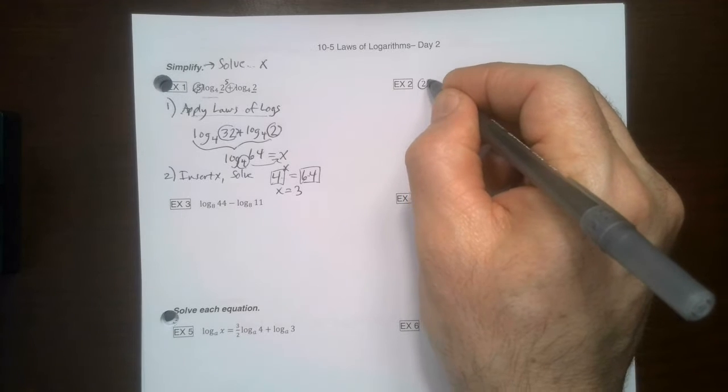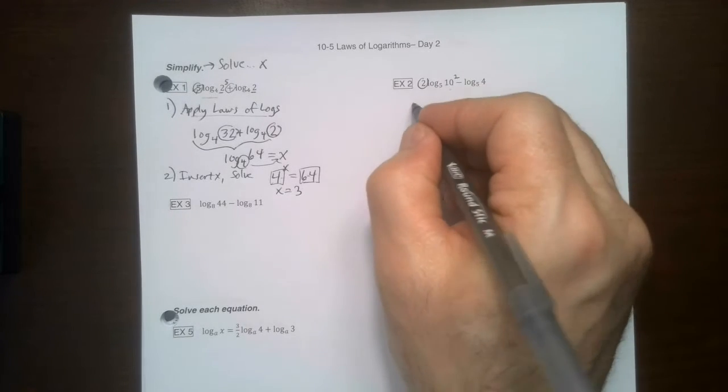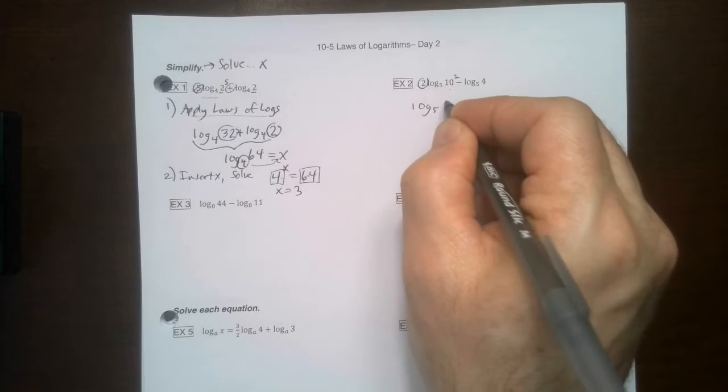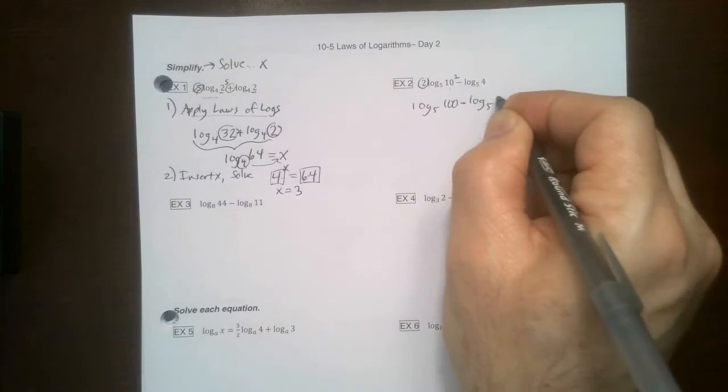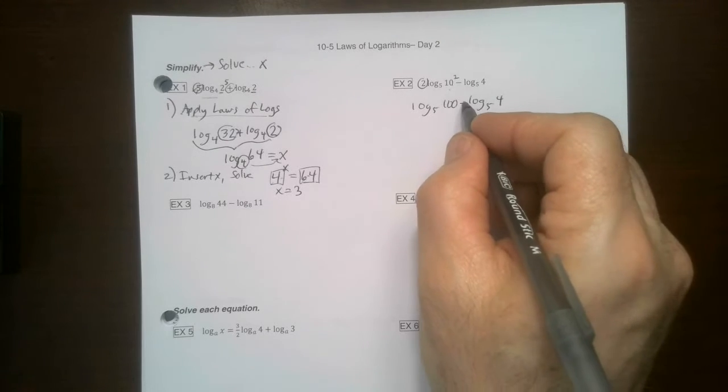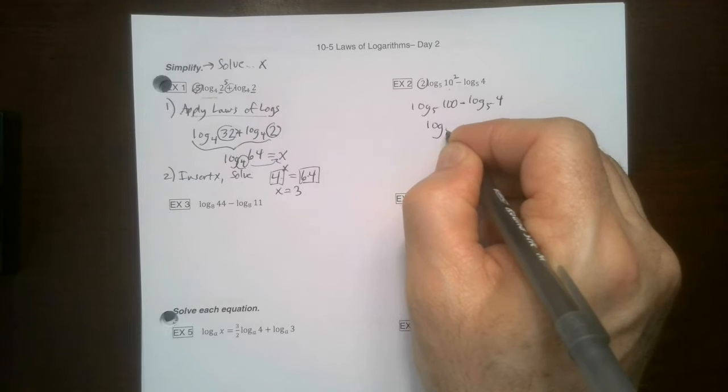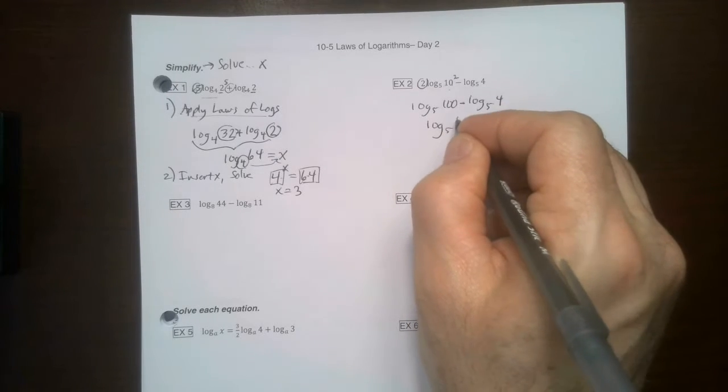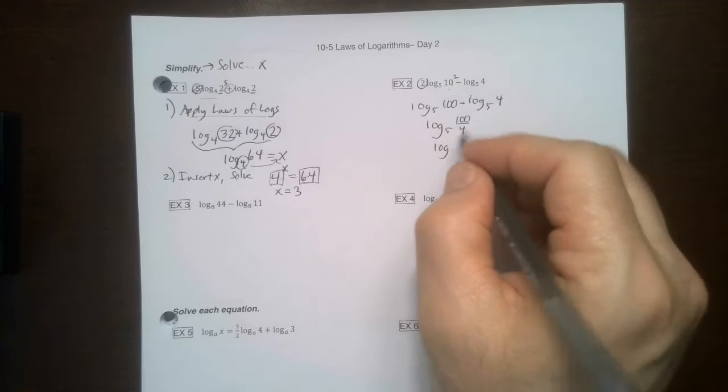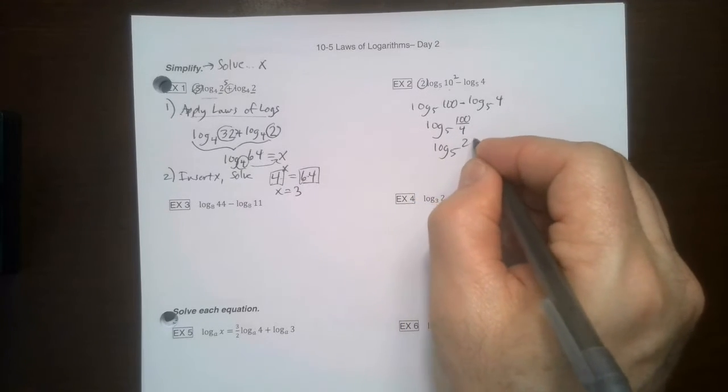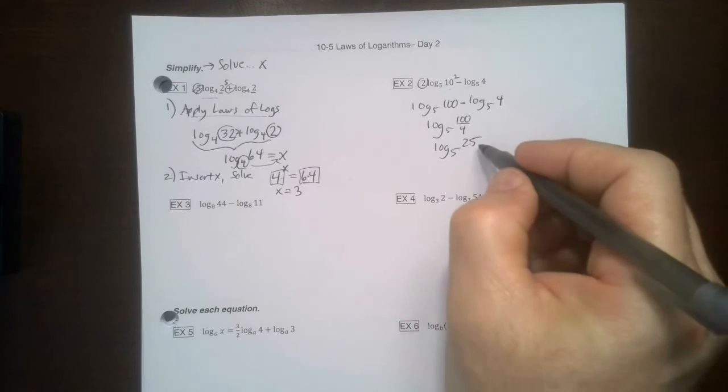Some of these you can just look at and figure it out in your head though. Same thing here. We're going to take that 2. We're going to put it there. This one's easy. 10 squared is a hundred. So I'm going to go like this. Minus log base 5, 4. Now what does minus mean? It means divide. So this turns into log 5, a hundred over 4, which is just the same thing as 25.